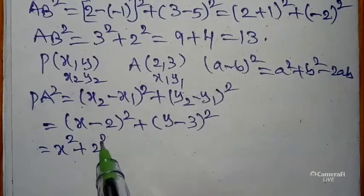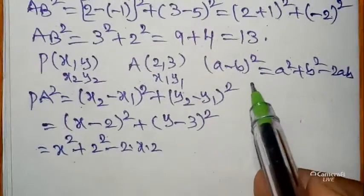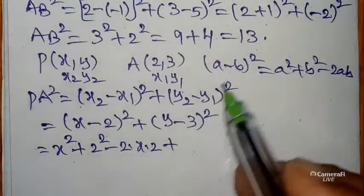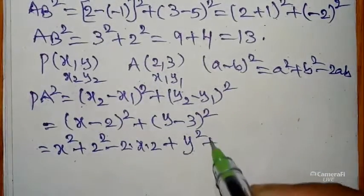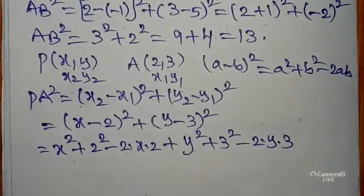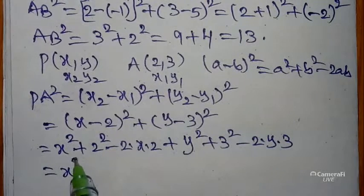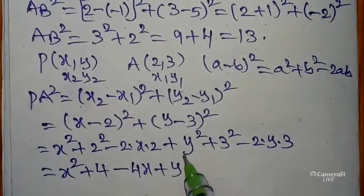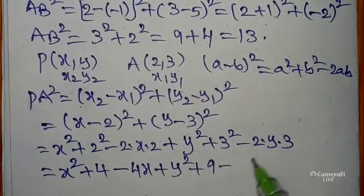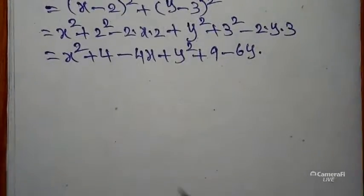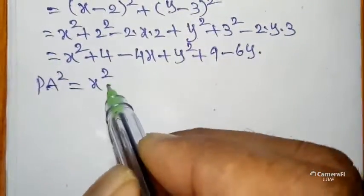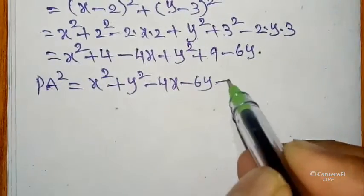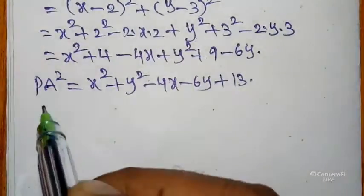Expanding: PA² = x² + 4 − 4x + y² + 9 − 6y. So PA² = x² + y² − 4x − 6y + 13.